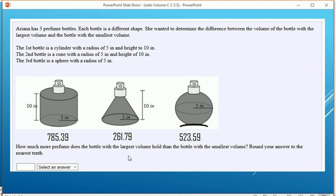Now that we have those three, we're going to identify the largest and the smallest. It's going to be these two right here. And now we subtract to find their difference, and we get 523.59.